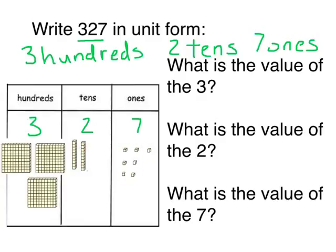Because the three is in the hundreds place, the two is in the tens place, and the seven is in the ones place — what is the value of that three? Well, that three doesn't just stand for three ones; it stands for three hundreds. I can count them by counting by one hundred: one hundred, two hundred, three hundred. The value of the three is three hundred.